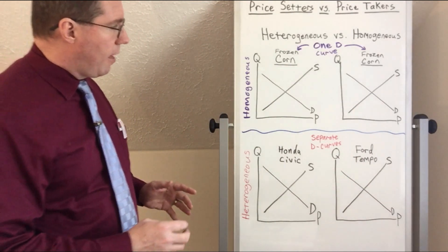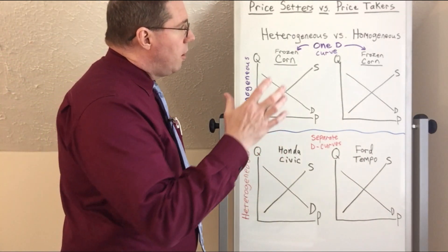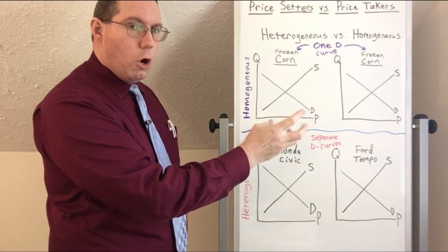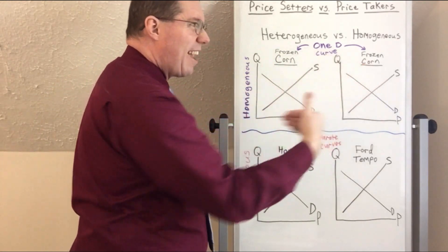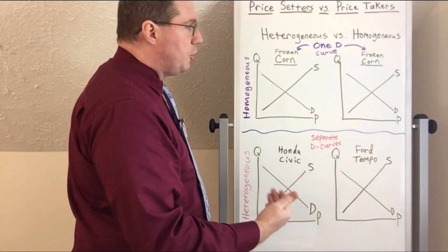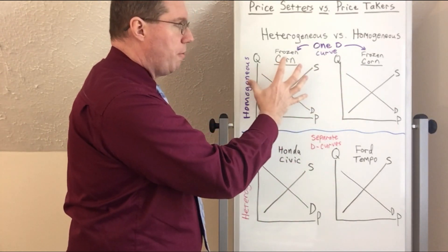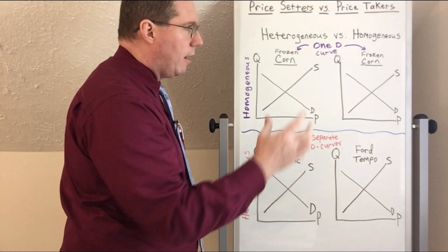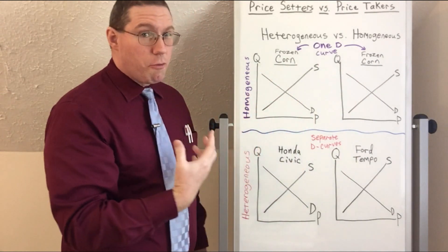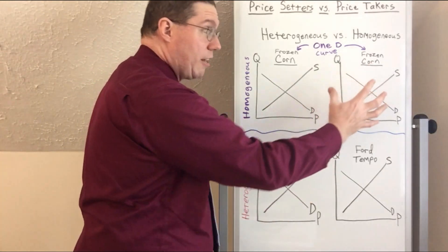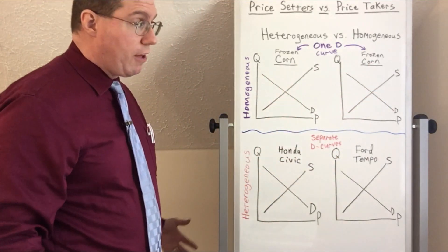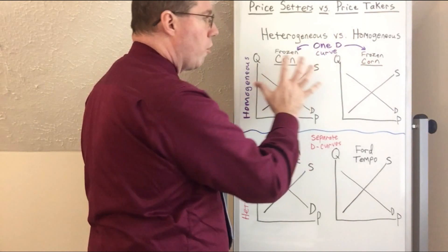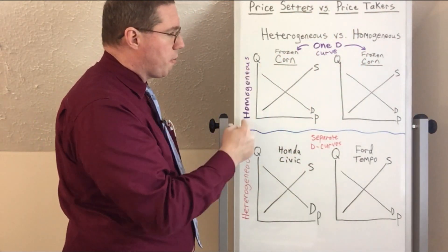Homogeneous products: if you go buy frozen corn from Publix or buy Green Giant brand frozen corn, it's really hard to argue why Green Giant frozen corn is different than Publix frozen corn. Maybe you can tell the difference, but generally speaking, frozen corn is frozen corn. We call that a homogeneous product.